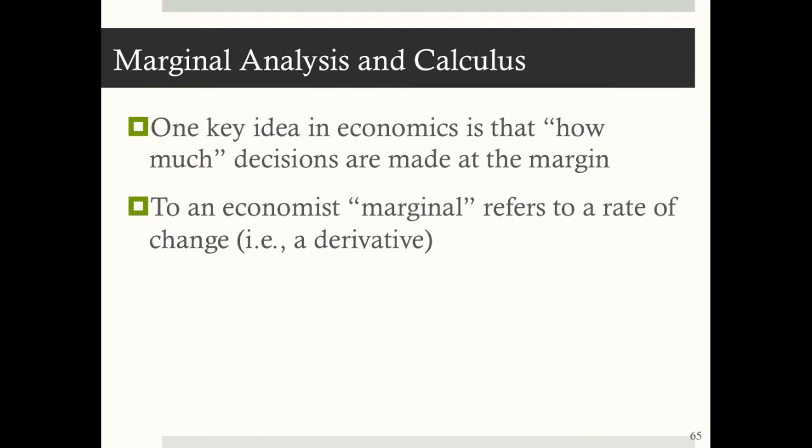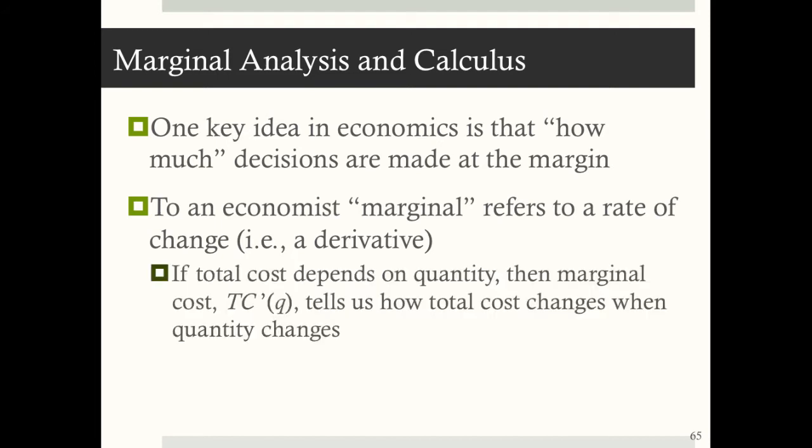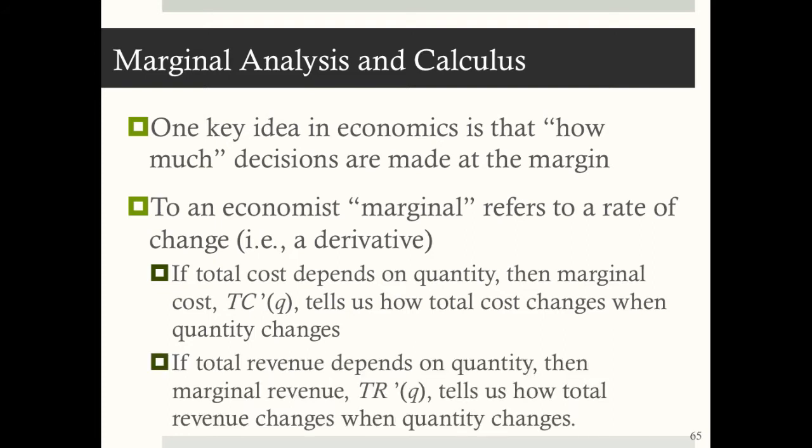To a mathematician, the rate of change is a derivative or a slope. To an economist, the rate of change is marginal. For example, if total cost depends on quantity, then marginal cost TC'(Q) tells us how total cost changes when quantity changes. And if total revenue depends on quantity, then marginal revenue TR'(Q) tells us how total revenue changes when quantity changes.